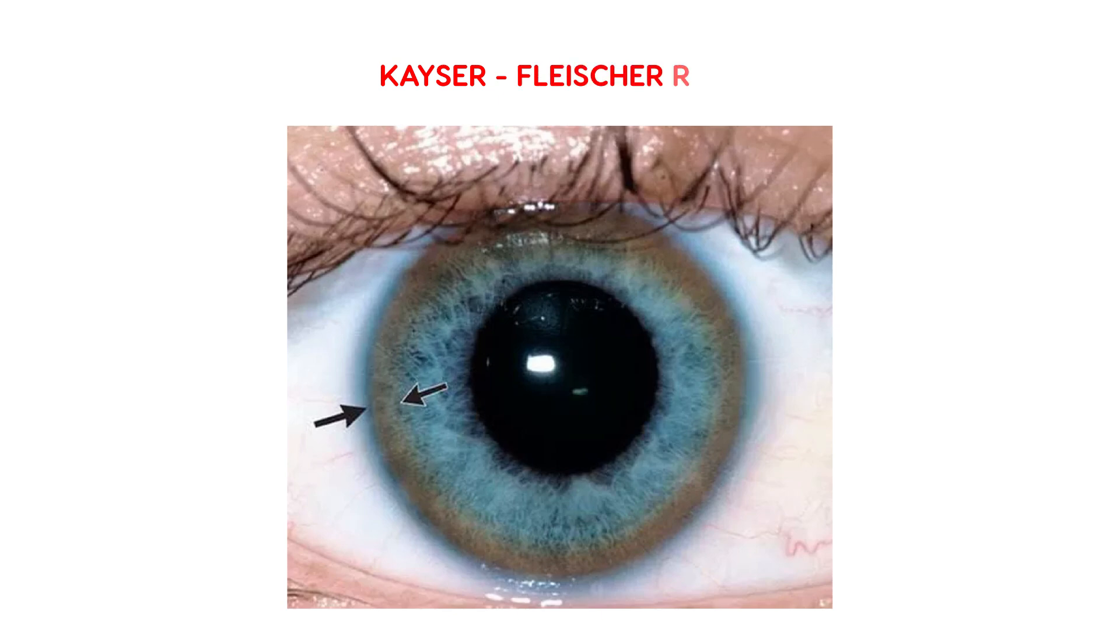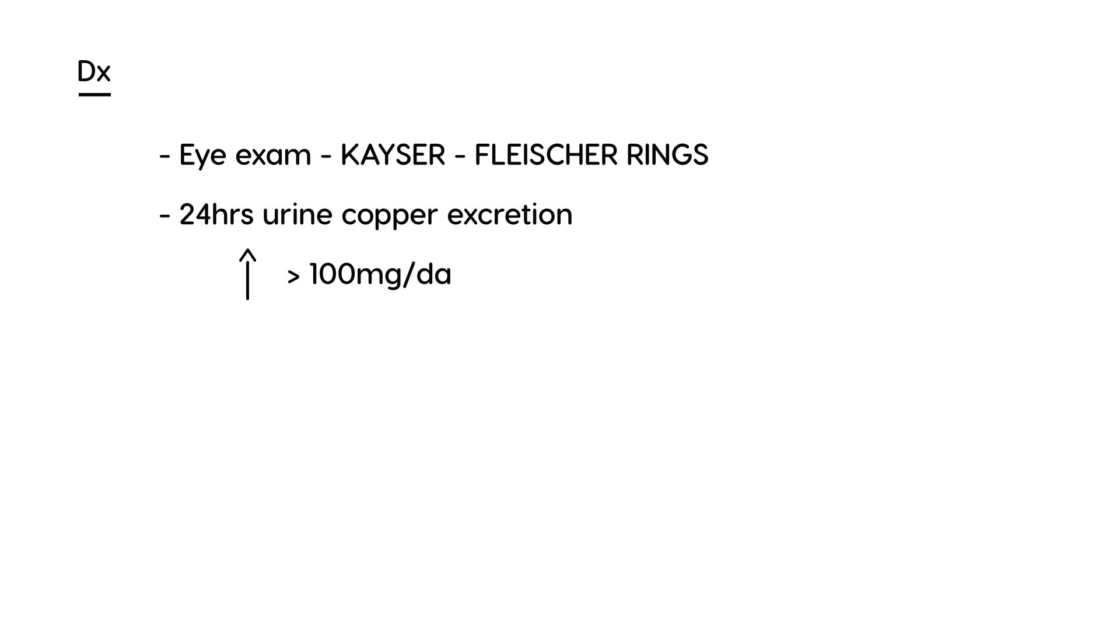The diagnostic workup of Wilson disease involves an eye exam, which will show those Kaiser-Flesher rings, and a 24-hour urine copper excretion, which will be high—greater than 100 micrograms per day. Normal is less than 30.